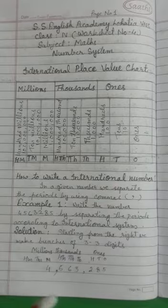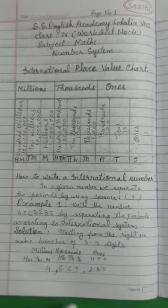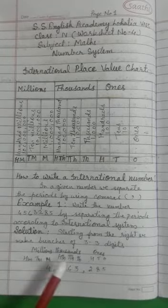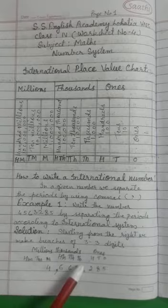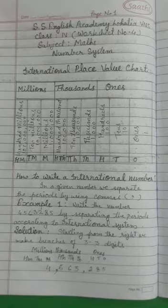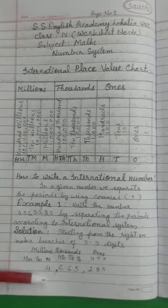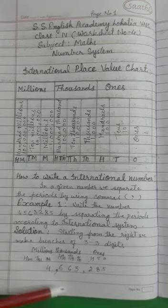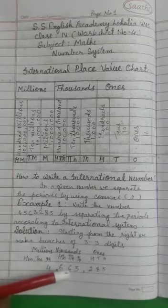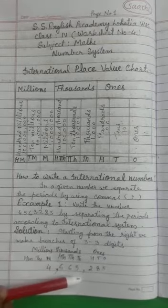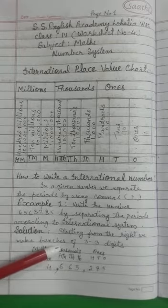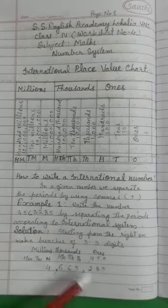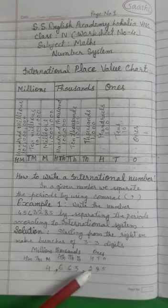In the ones period, we fill ones, tens and hundreds. Then in the thousands period, we fill thousands, ten thousands and hundred thousands. In the millions period there is only one digit: four. So you will read: four million, five hundred sixty-three thousand and two hundred eighty-five.